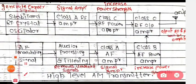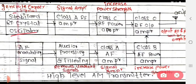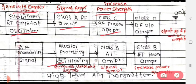Now we see the functions of these various blocks. First, the stabilized RF crystal oscillator: its function is to generate the carrier signal. After that, the class C RF amplifier: its function is to act as a signal amplifier. Then the class C RF power amplifier: its function is to increase the power strength of the signal.